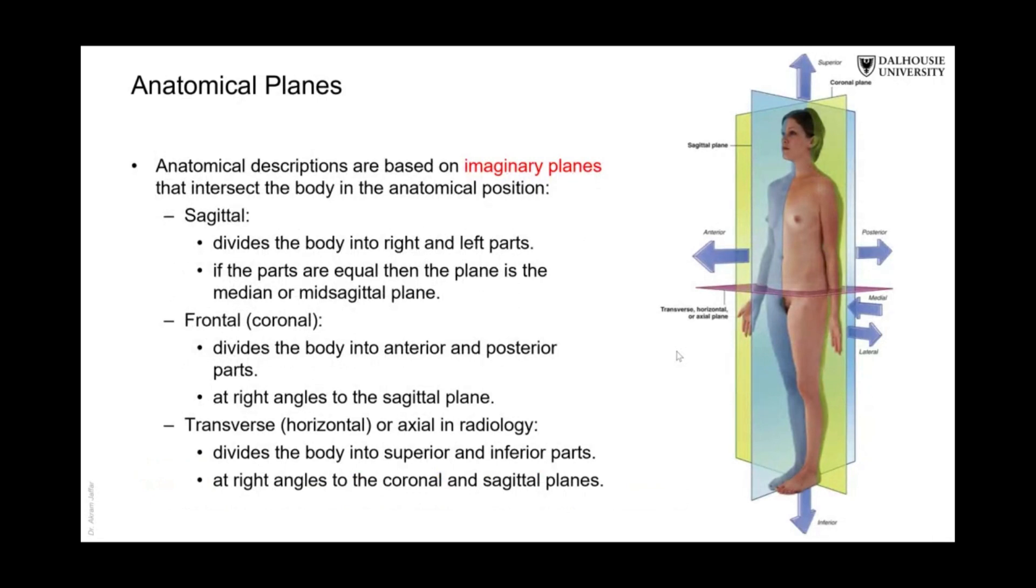There are anatomical planes. These are imaginary planes that cut the body into pieces. So we have the sagittal plane, as you can see it here, the blue one, and this cuts the body into two sides, right and left parts.